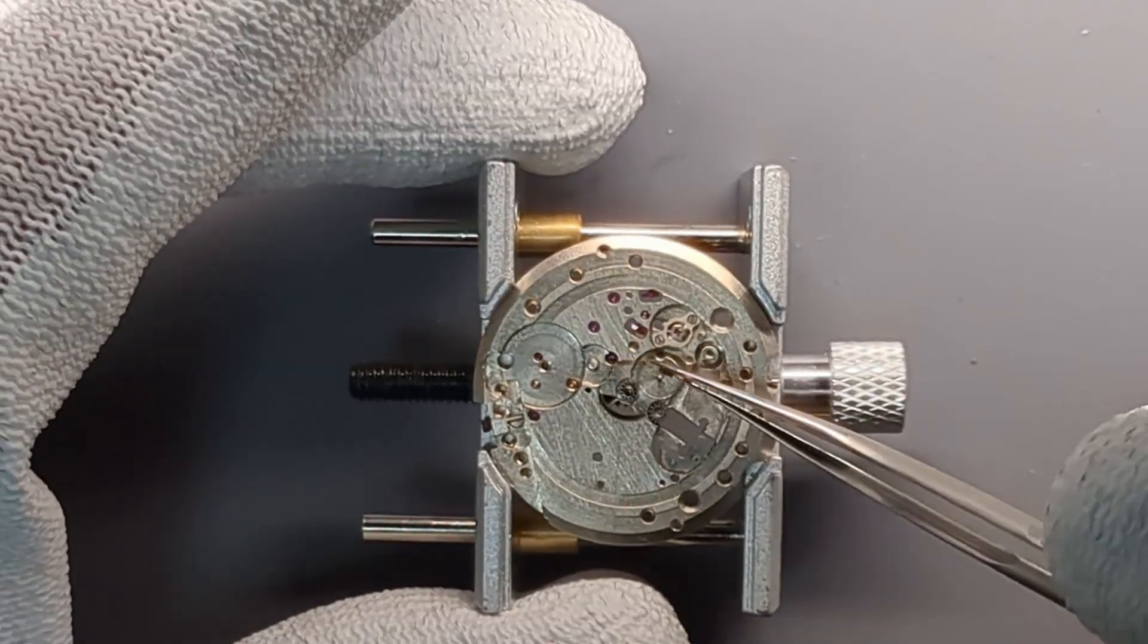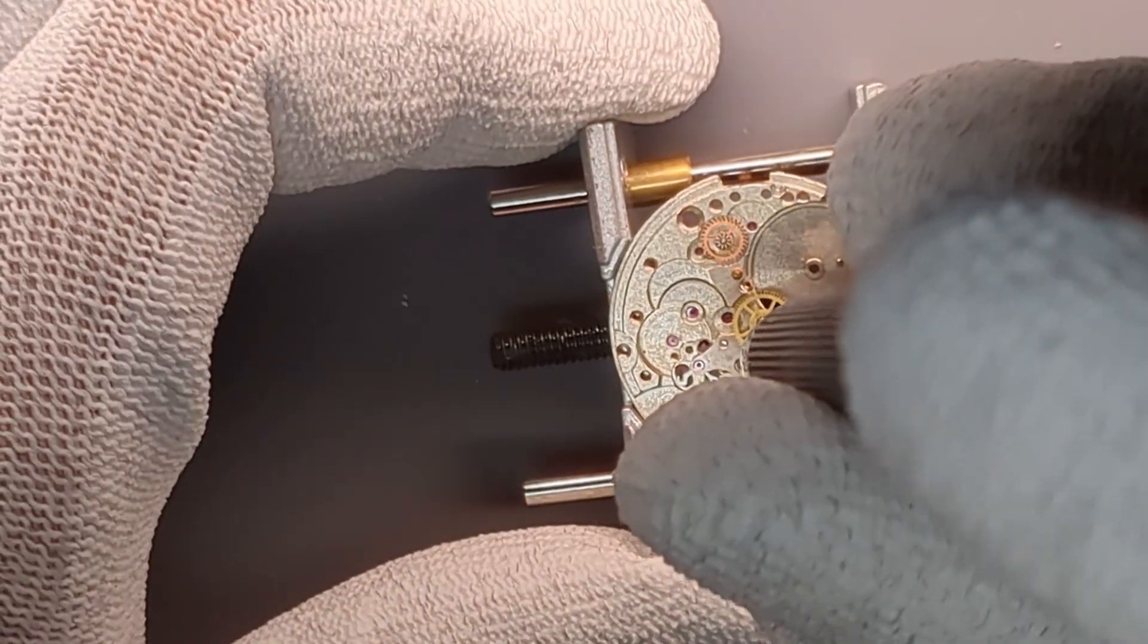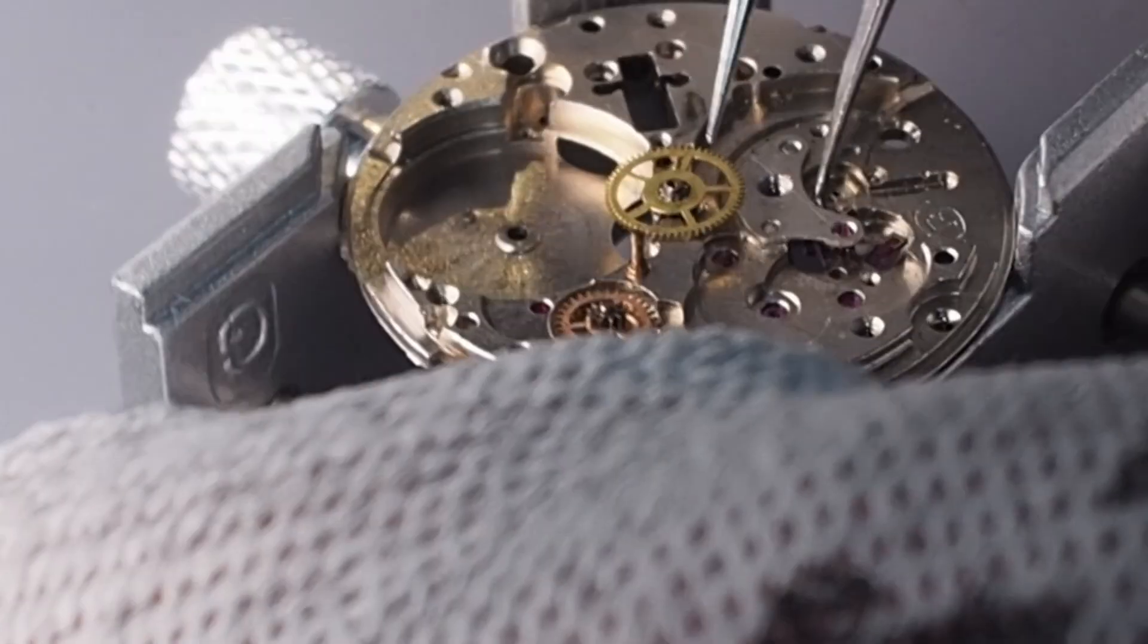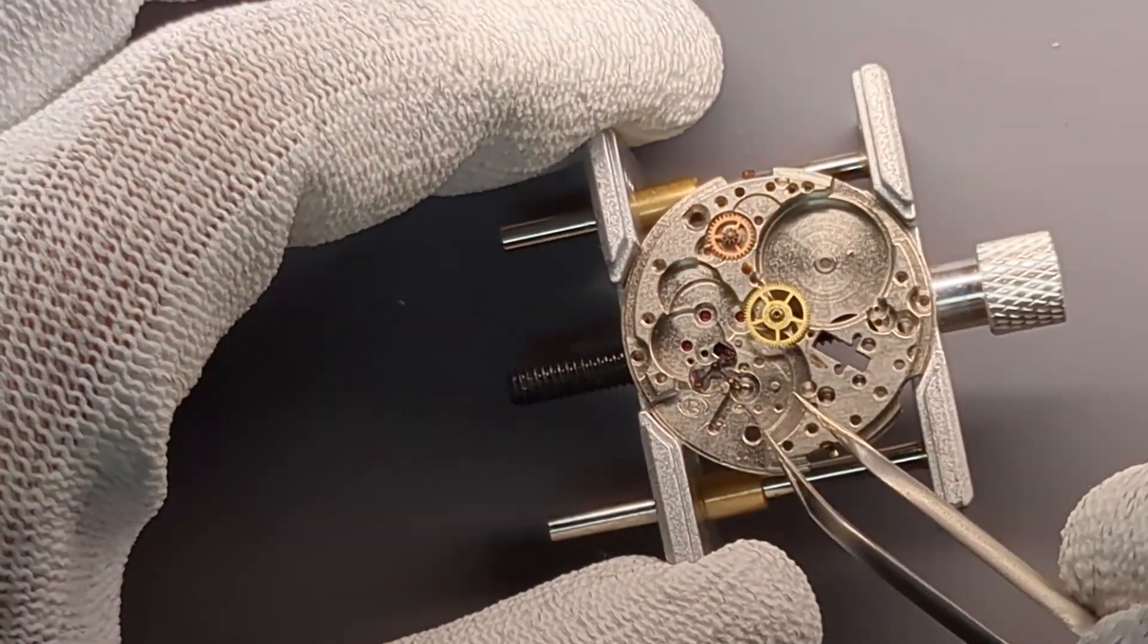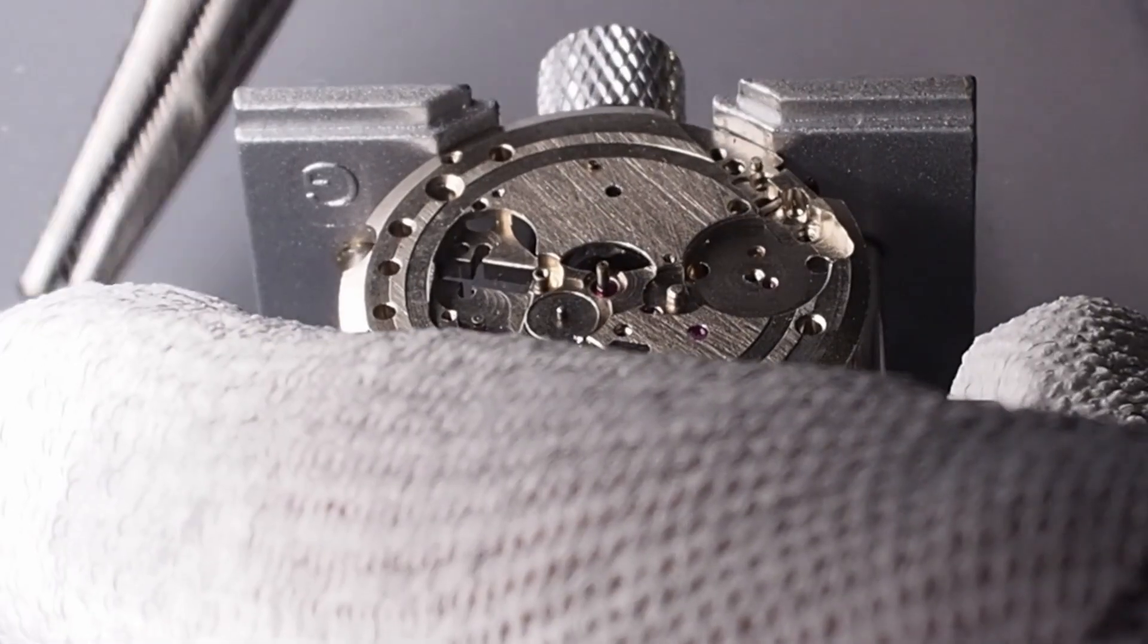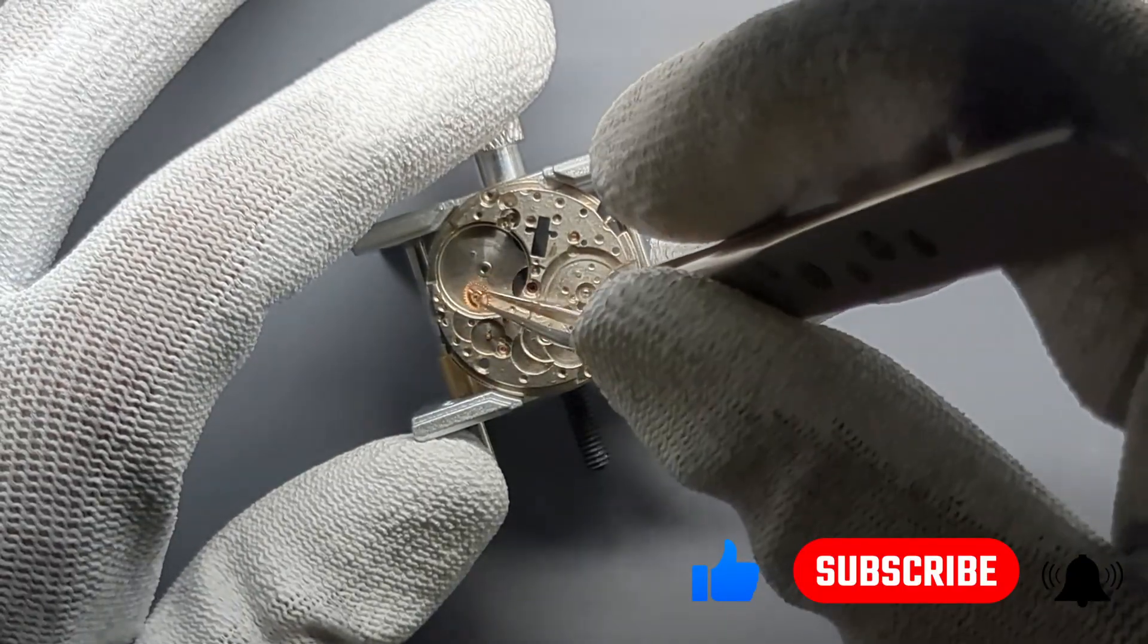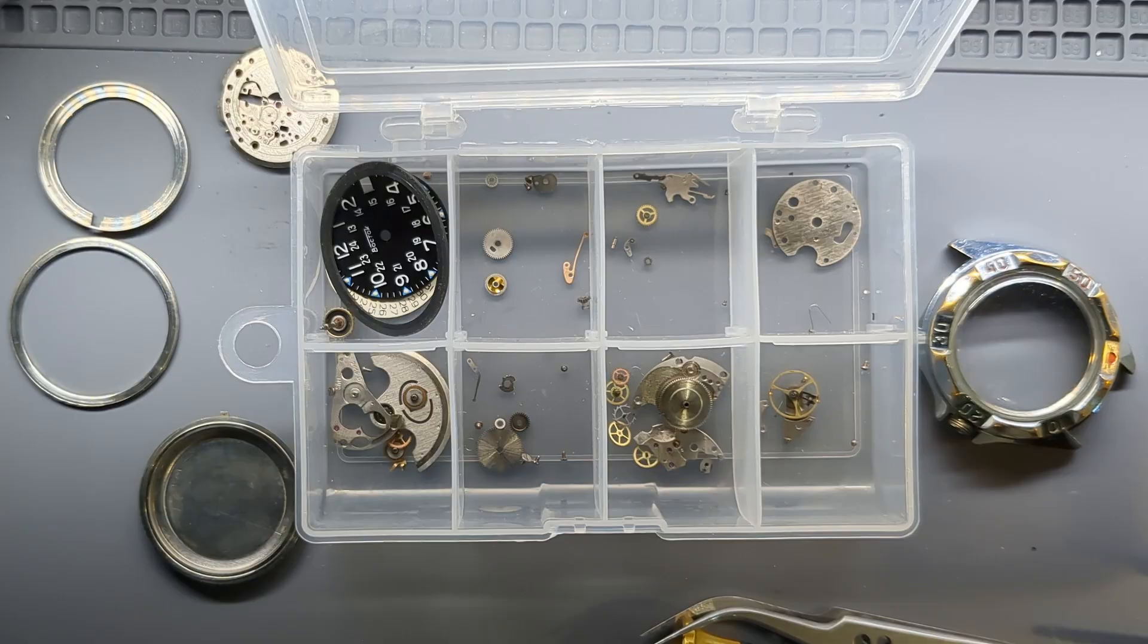I'm removing the minute wheel and the intermediate wheel. On the other side, I'm removing the pallet fork bridge and the pallet fork. I remove the cannon pinion using small pliers and now I can remove the center wheel. The last thing left is a gear that I can remove using my tweezers. All parts are removed, prepared for cleaning and now I will focus on the case.